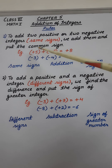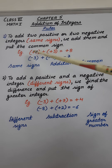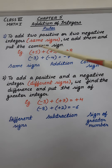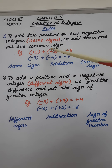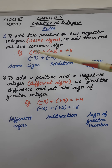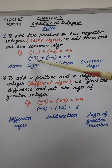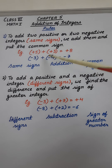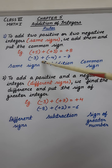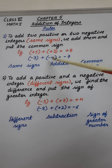The sign will be the common sign of both the numbers. Both numbers have a plus sign, so the answer is also plus 8. Similarly, minus 3 plus minus 4 — again, we are adding both negative integers.